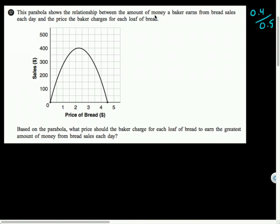Shows the relationship between the amount of money a baker earns from bread sales each day, so earns, sales I'm guessing, and the price the baker charges for each loaf of bread. So the price of bread is on the x-axis. Based on the parabola, what price should the baker charge for each loaf of bread to earn the greatest amount of money from bread sales each day?